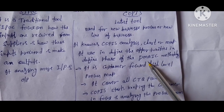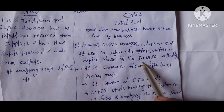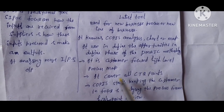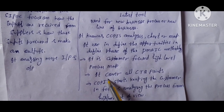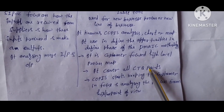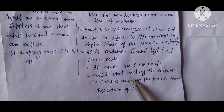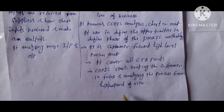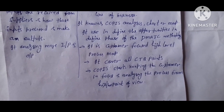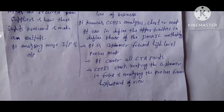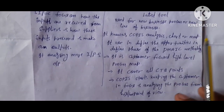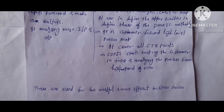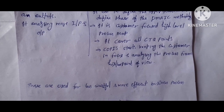COPIS is also known as a COPIS analysis chart, COPIS chart, or COPIS map. It is used in the Define phase of the DMAIC methodology. It is a customer-focused, high-level process map that covers all CTQ (Critical to Quality) factors, keeping the customer in focus and analyzing the process from a higher-level point of view.